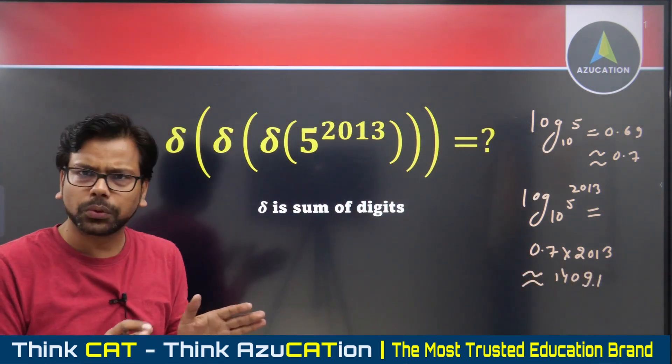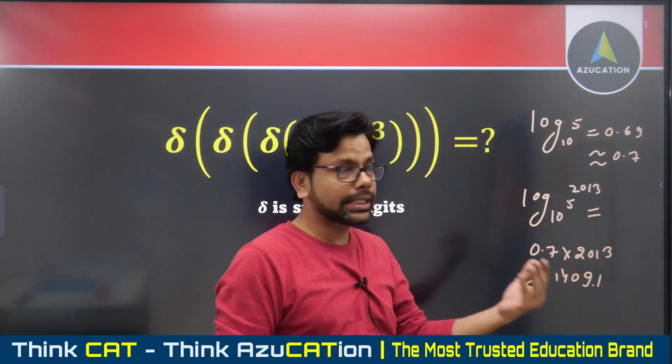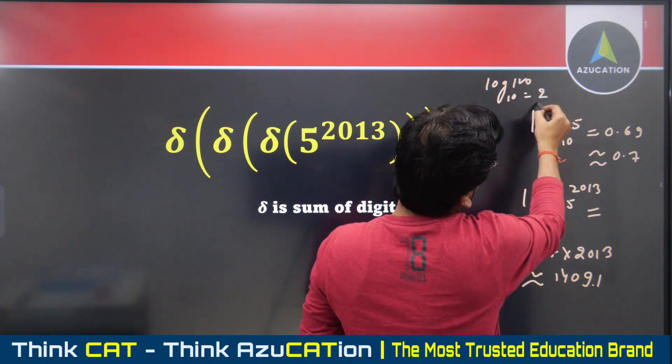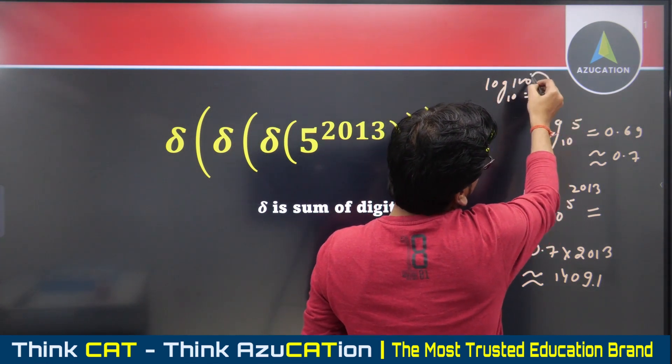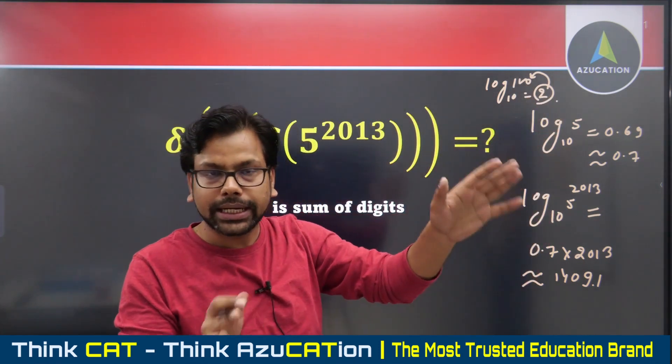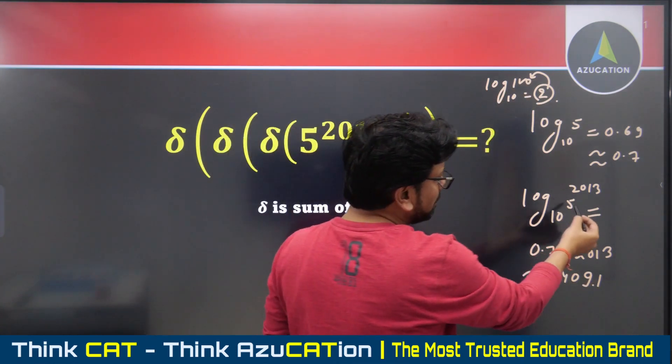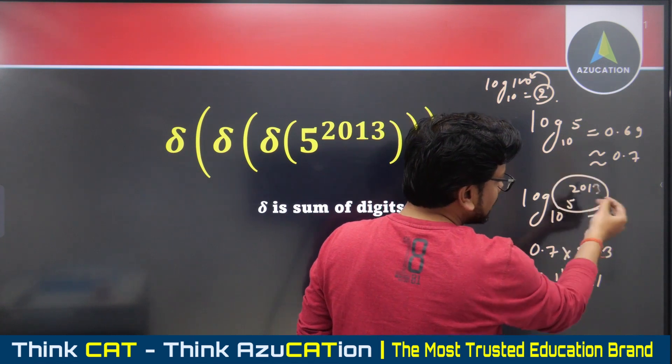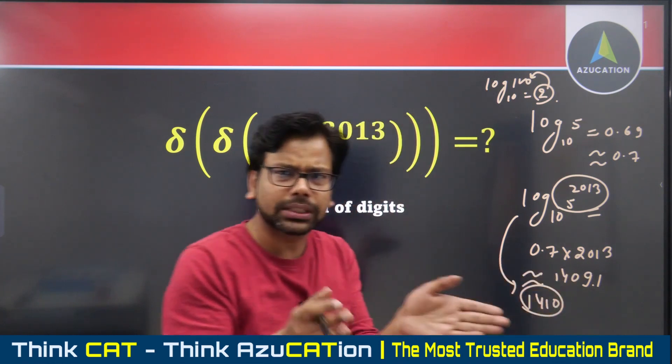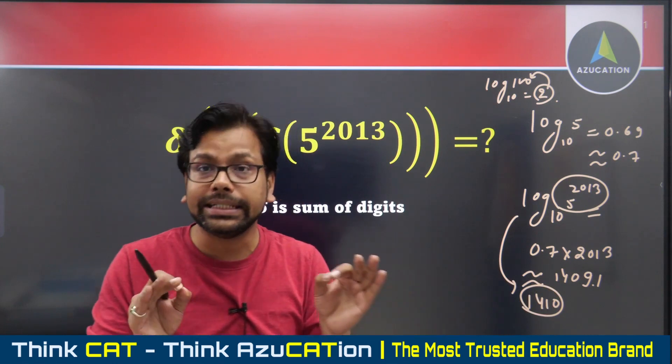When you find the log of any number, the integral value tells you the number of digits. If the integral value is 1409, we have approximately a 1410-digit number, more or less. It could be 1408, 1407, 1406, or 1411, 1412. This is a 1410-digit number.